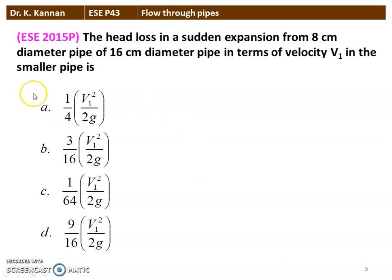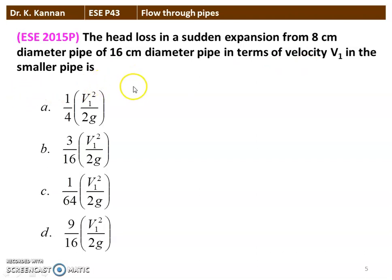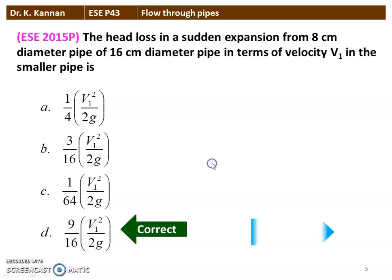The next question is from the 2015 question paper. The head loss in a sudden expansion from an 8 cm diameter pipe to a 16 cm diameter pipe in terms of velocity V1 in the smaller pipe — the correct answer is option D: 9/16 × V1² / 2G.